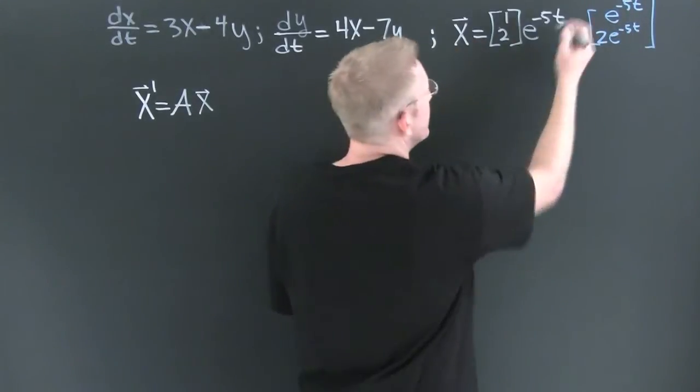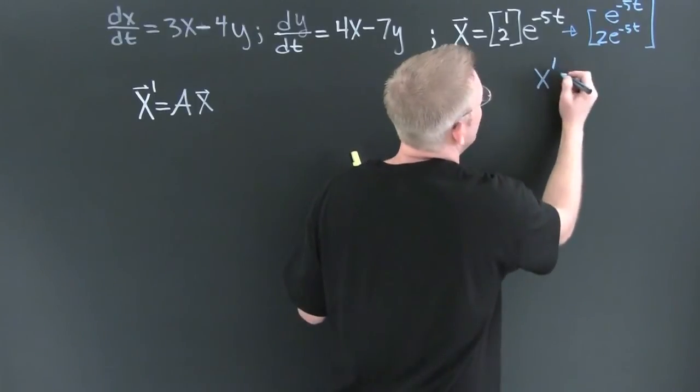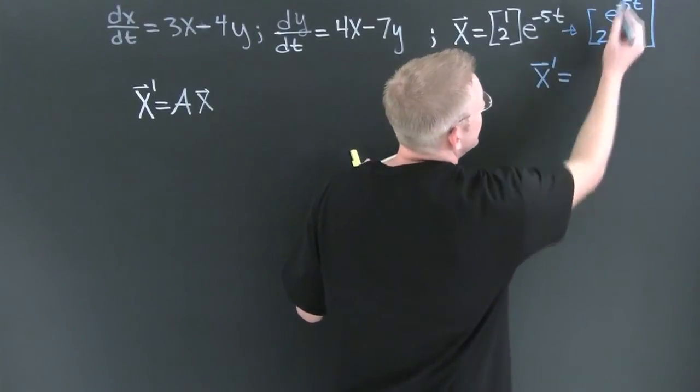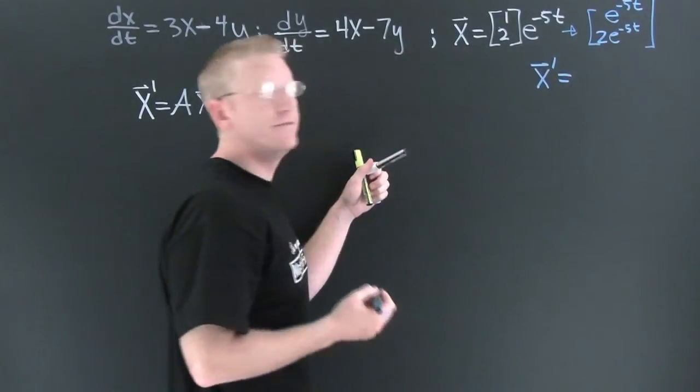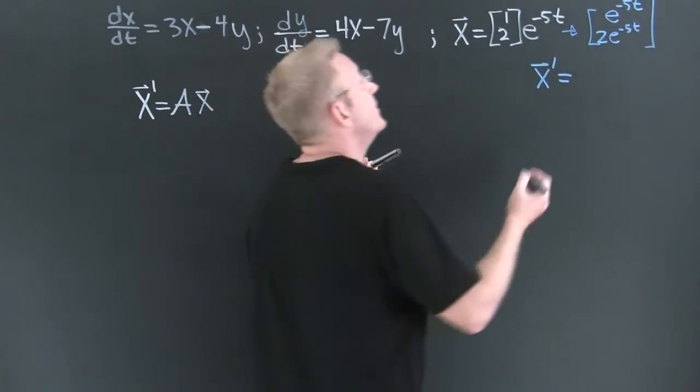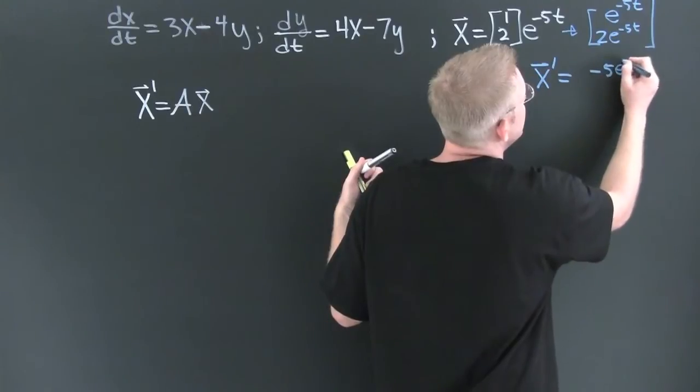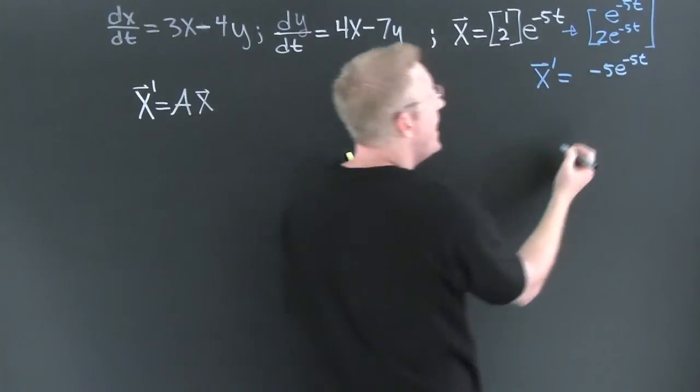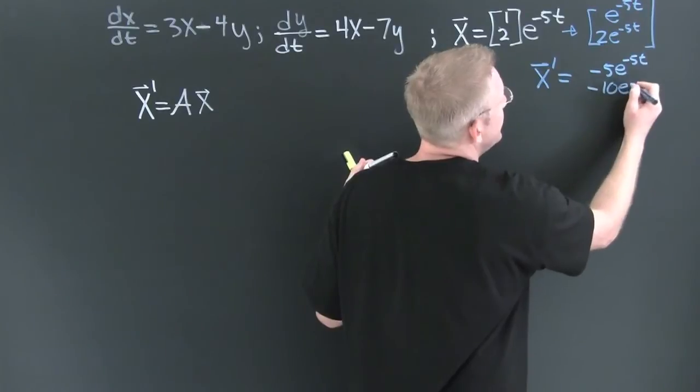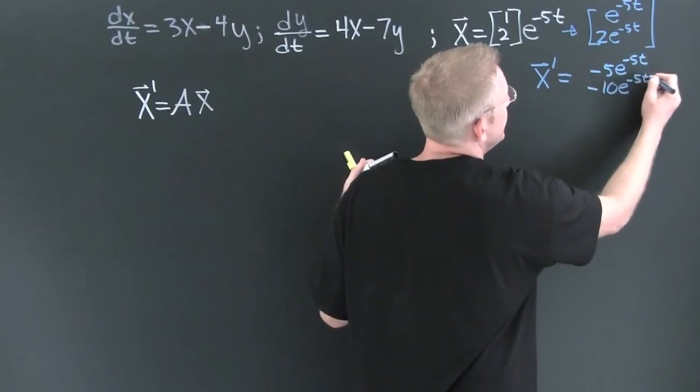So now I can find the derivative of that guy, x prime, that's going to be the derivative of the components of that vector. Here we go. Minus 5e to the minus 5t. And, minus 10e to the minus 5t.